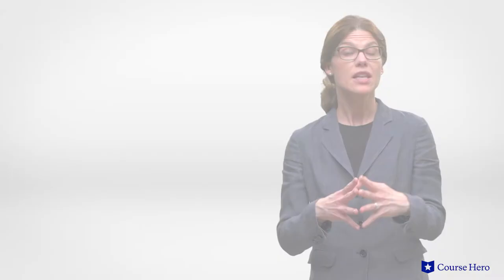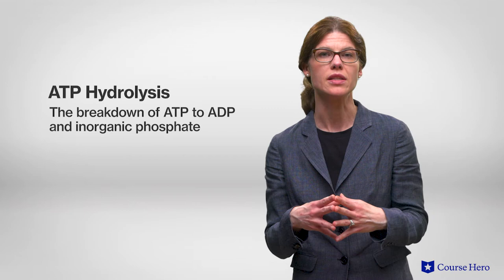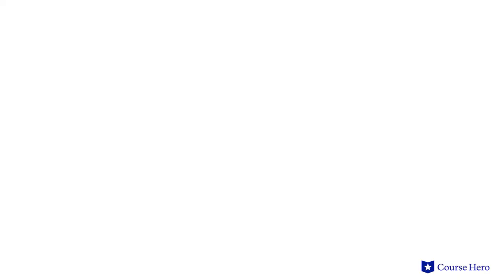The binding of sodium ions to the carrier protein triggers ATP hydrolysis, the breakdown of ATP to ADP and inorganic phosphate. The phosphate stays bound to the protein pump, and the energy released by ATP hydrolysis causes the pump to physically change its shape and to open toward the outside of the cell. In its current shape, the pump has a low affinity for sodium ions, so the three bound sodium ions are released to the outside of the cell.